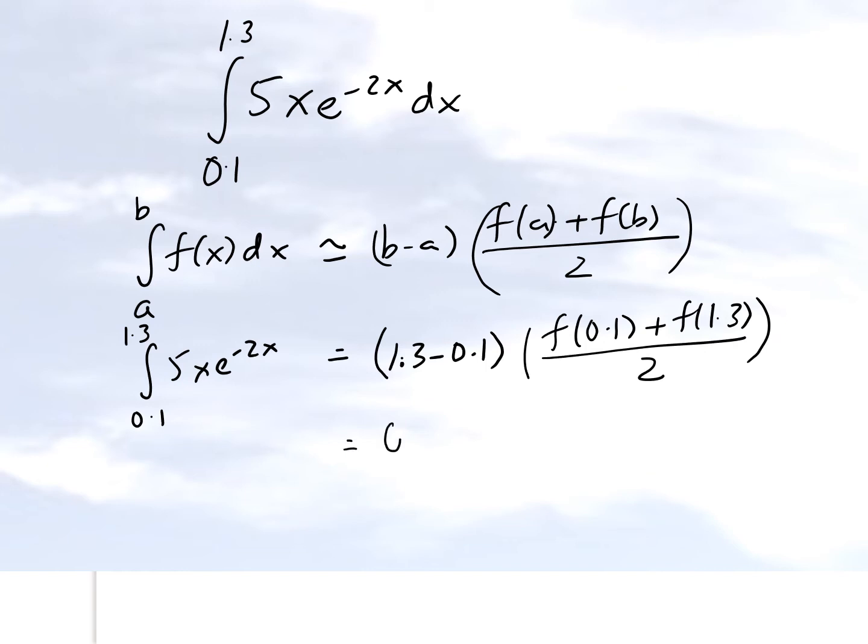This gives us 1.2, and this one is 5 times 0.1 times e to the power minus 2 times 0.1, plus 5 times 1.3 times e to the power minus 2 times 1.3, divided by 2. And this value here turns out to be as follows once you do the calculations.